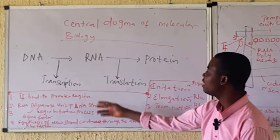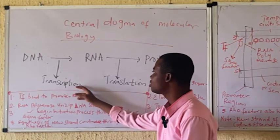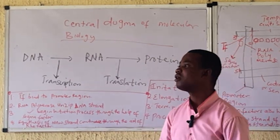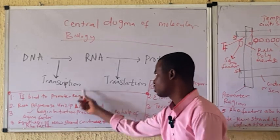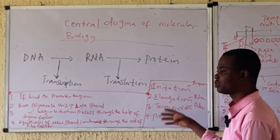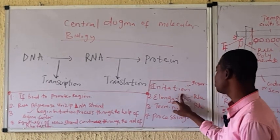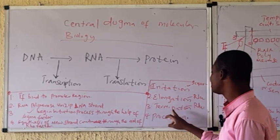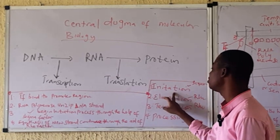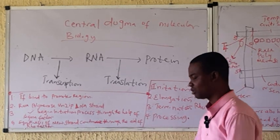Now we'll be looking at transcription — the process, the mechanisms, and the steps involved. Transcription involves four stages: initiation, elongation, termination, and processing.